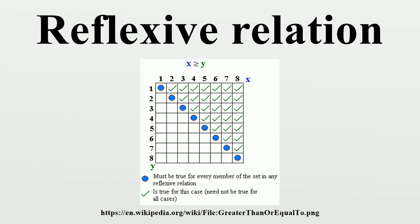Examples of irreflexive relations include: is not equal to, is coprime to, is a proper subset of, is greater than, and is less than.